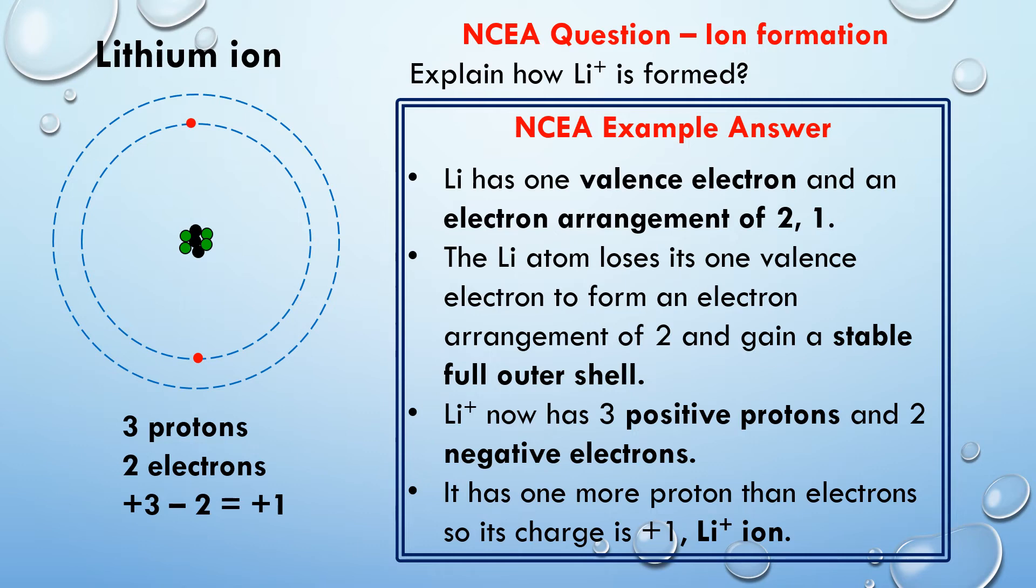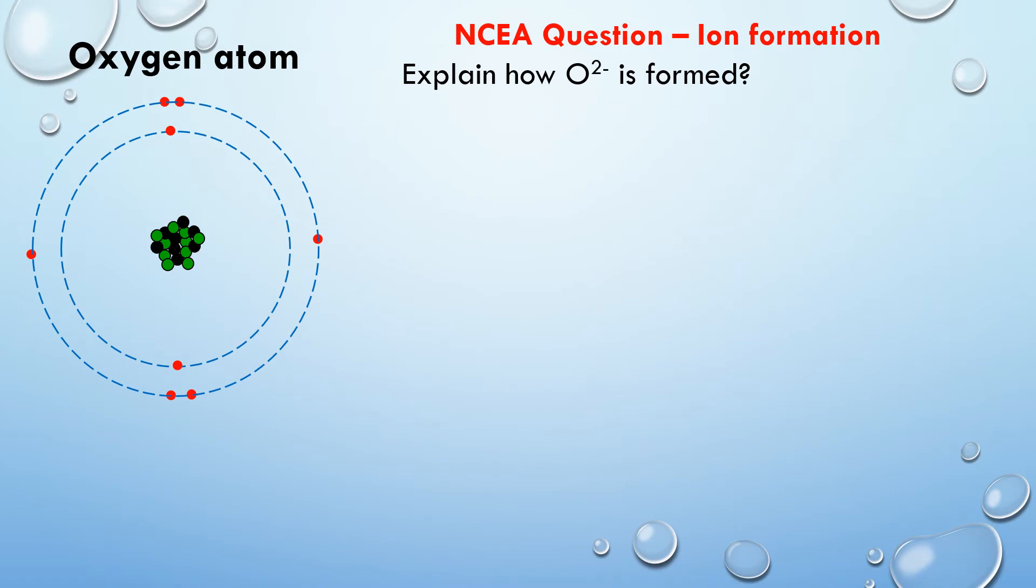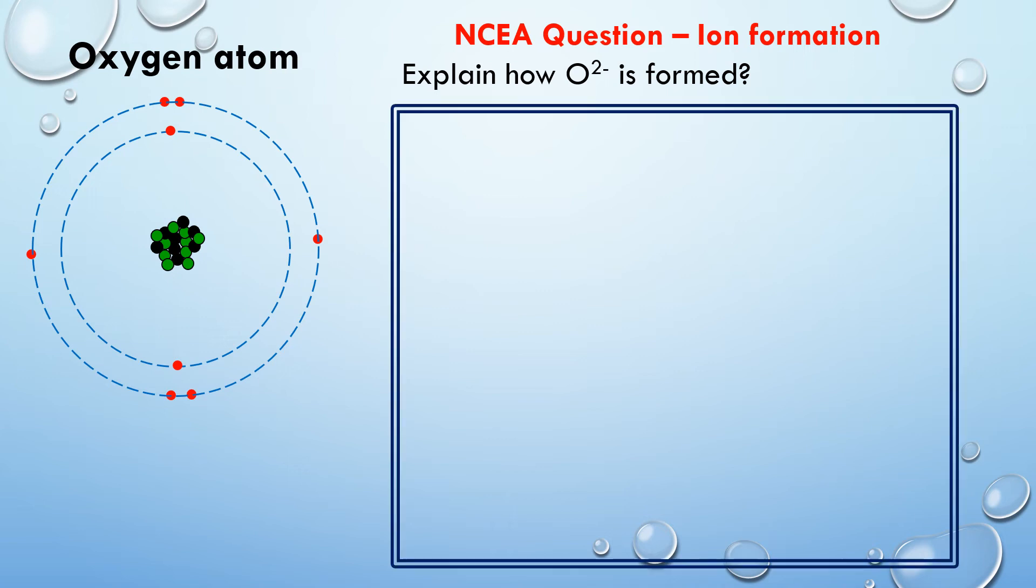Okay, so the same type of question will also occur when we want to talk about a negative ion. So here's an example of a question: explain how the oxide ion or the O2- ion is formed. So here I've drawn a picture of the oxygen atom. Of course, you might just draw oxygen atom as an electron arrangement of 2,6. And then I'll write the same four parts to answer this.